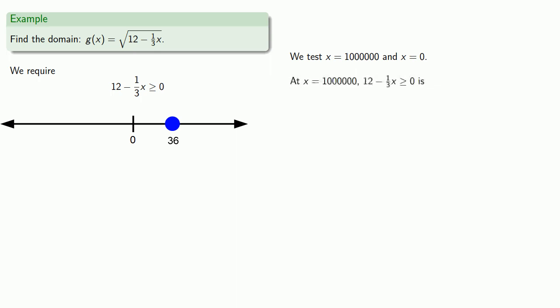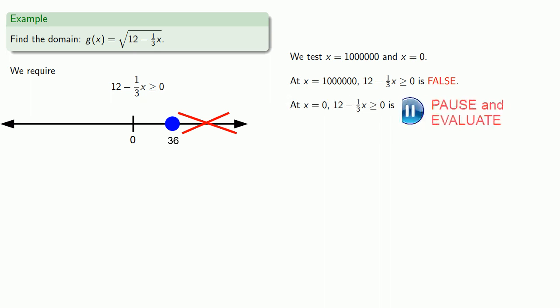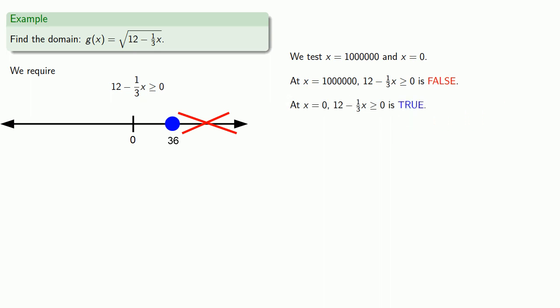At x = 1,000,000, our inequality is false, so we do not include the section to the right of the critical value. At x = 0, our inequality is true, so we do include the region to the left of the critical value. And so our solution will be...